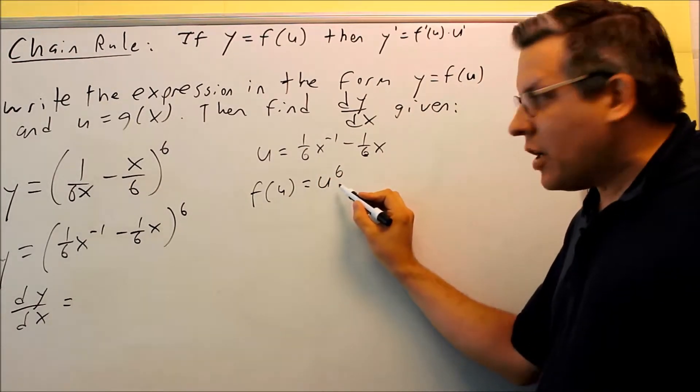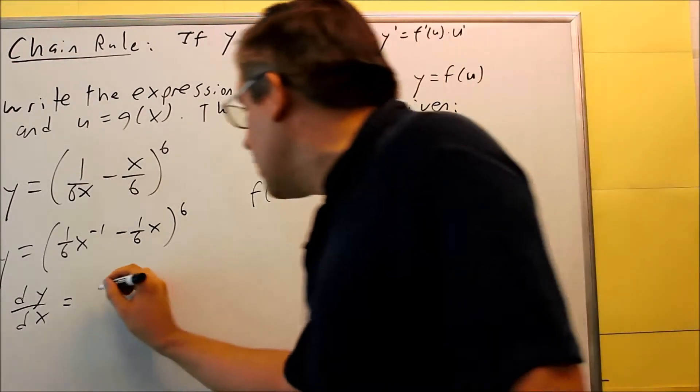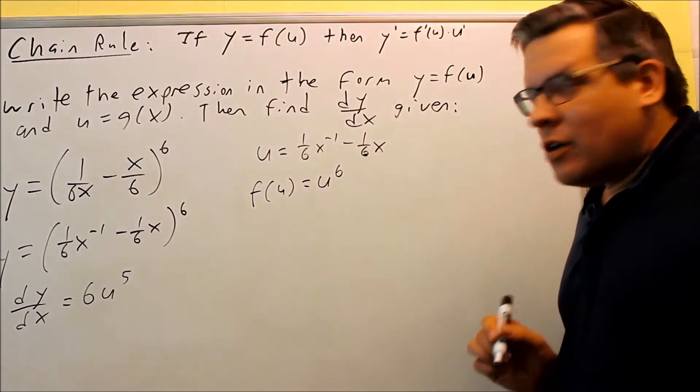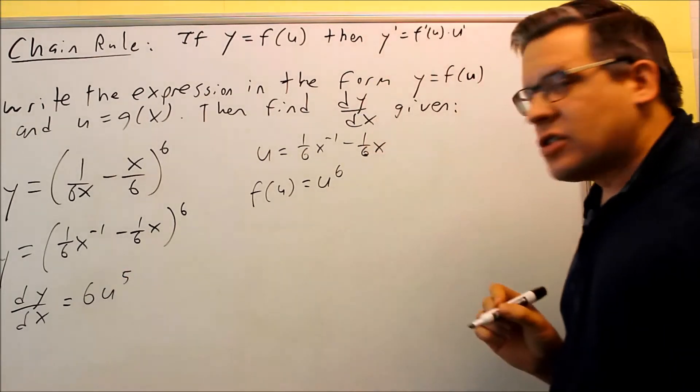F primed of U. Here it is. That's my F of U. Derivative would be 6U to the fifth, which is applied the power rule for the outside.